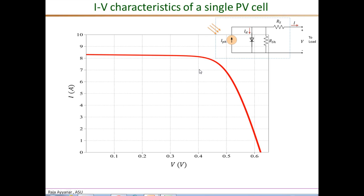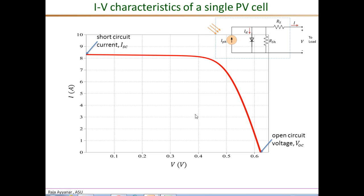In this IV characteristic, two important points are highlighted. The first is the short circuit current I_SC, which is the current when voltage is zero. The second is the open circuit voltage V_OC, which is the voltage when current is zero — the maximum voltage from the PV cell. I_SC is the maximum current and V_OC is the maximum voltage, and as the plot shows, these do not occur simultaneously.